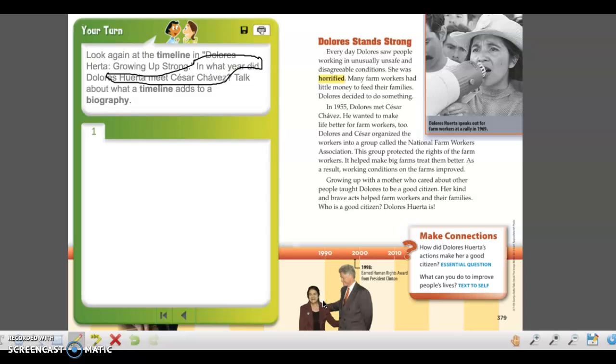So think about that as you practice biographies. In your packet, your practice packet, I want you to do page 236. You're looking at features for genre, for biographies. Remember, we've covered heading, photograph, and today we focused on captions and timelines. So give it a try.